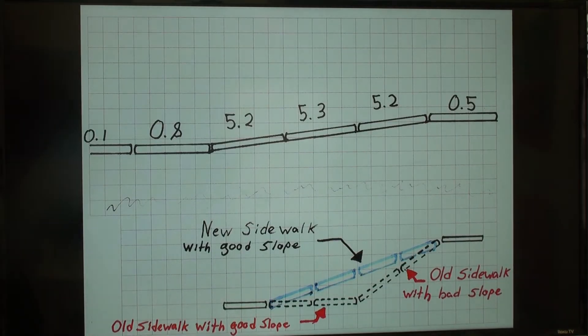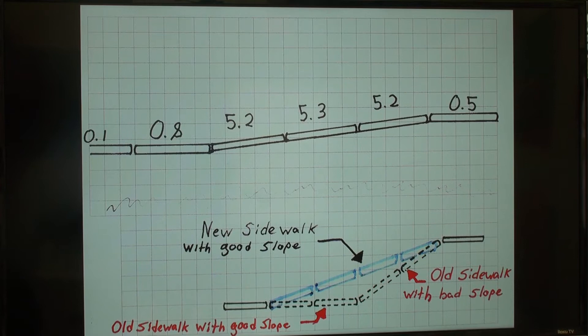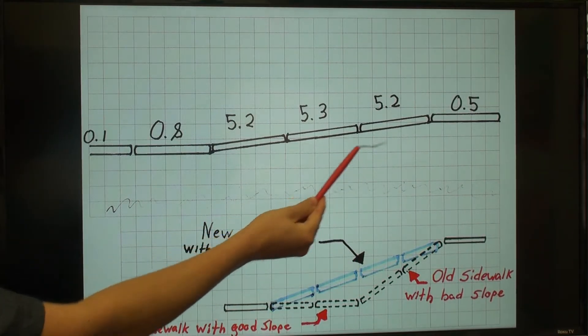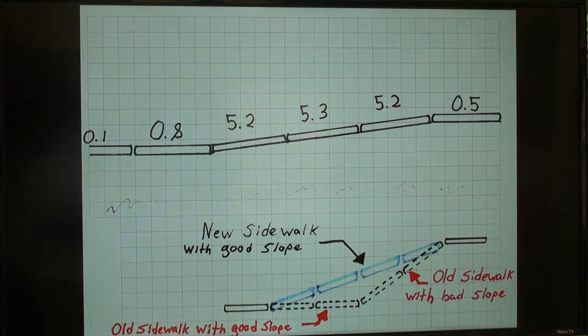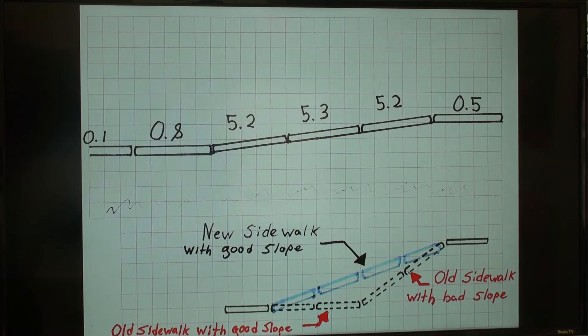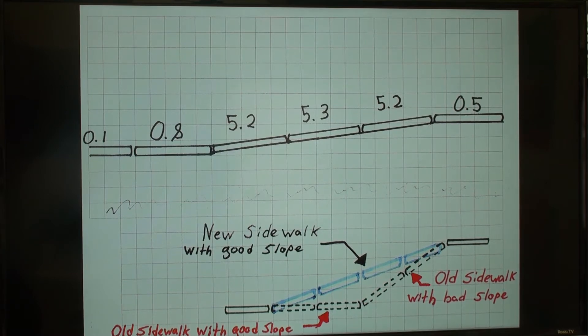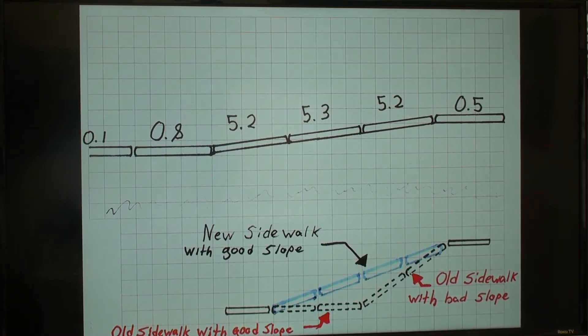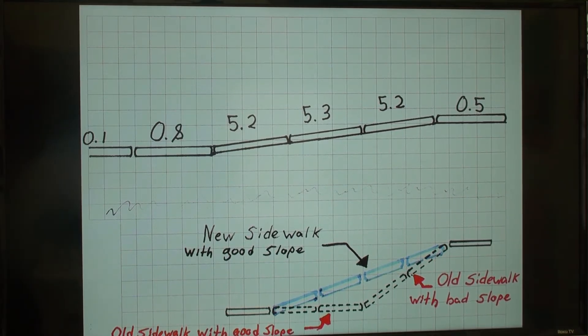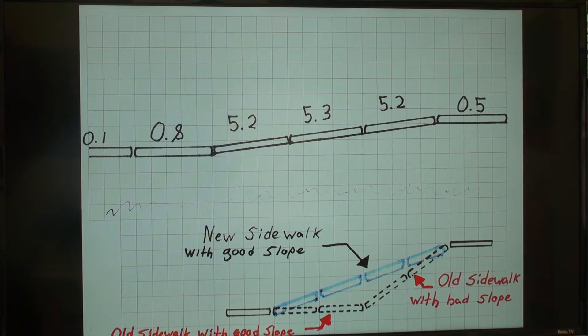For our first example, we have three sidewalk sections which are too steep to be a sloped sidewalk. One way of dealing with problems like this is to demo a panel with good slope to give us more room to place correctly sloped panels. We determine the slope of the new panels by adding the slopes of the ones we are demoing and dividing by the number of demoed panels. I call this the averaging method.